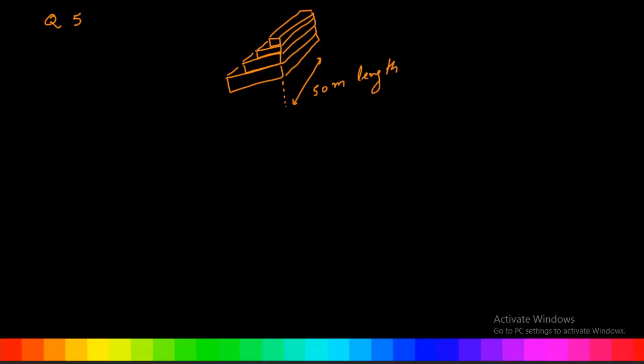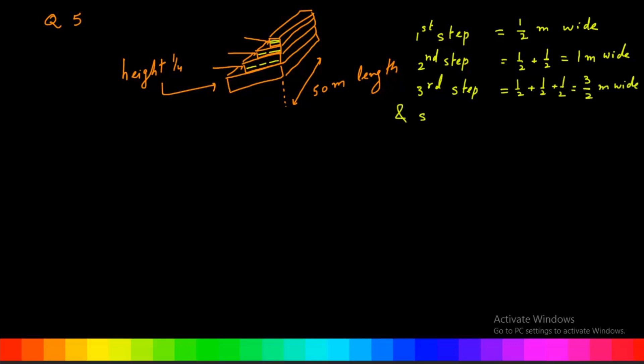It is given that length is 50 meters, height of each step is 1/4 meter, and the first step is 1/2 meter wide. The second step is 1/2 plus 1/2, that is 1 meter wide. The third step is 1/2 plus 1/2 plus 1/2, equal to 3/2 meters wide.